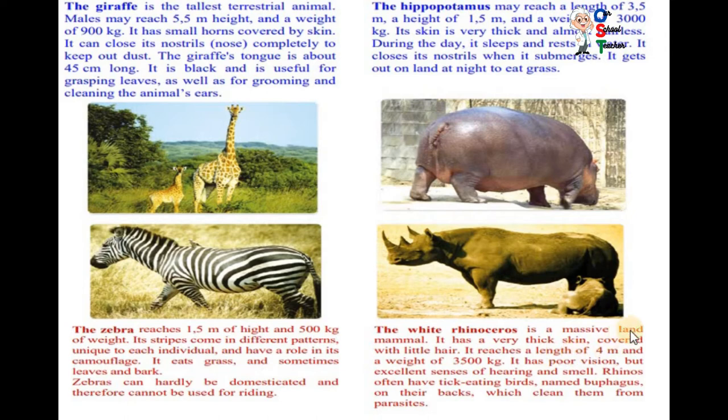it sleeps and rests in water. It closes its nostrils when it submerges. It gets out on the land at night to eat grass. The zebra reaches 1.5 meter of height and 500 kilogram of weight. Its stripes come in different patterns, unique to each individual and have a role in its camouflage. It can eat grass and sometimes leaves and bark. Bark is a covering of plant. Zebras can hardly be domesticated and therefore cannot be used for riding. The white rhinoceros is a massive land mammal. It has a very thick skin covered with little hair. It reaches a length of 4 meter and a weight of 3500 kilograms. It has poor vision but excellent senses of hearing and smell. Rhinoceros often have tick-eating birds named Oxpeckers on their back. Oxpeckers which clean them from parasites. You know, Oxpeckers is a bird that cleans its back from parasites.